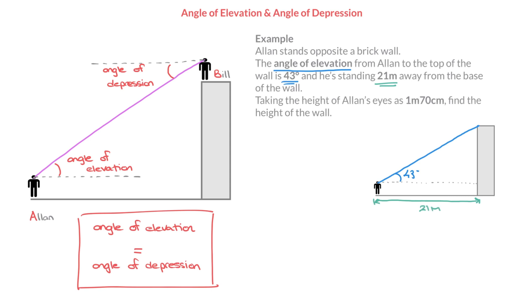Last but not least, we're told to take the height of Alan's eyes as 1 meter 70. In other words, the distance between the ground and this horizontal line is 1 meter 70, which I could also write as 1.7 meters. And finally, we need to find the height of the wall — this length right here — which I'll call h.